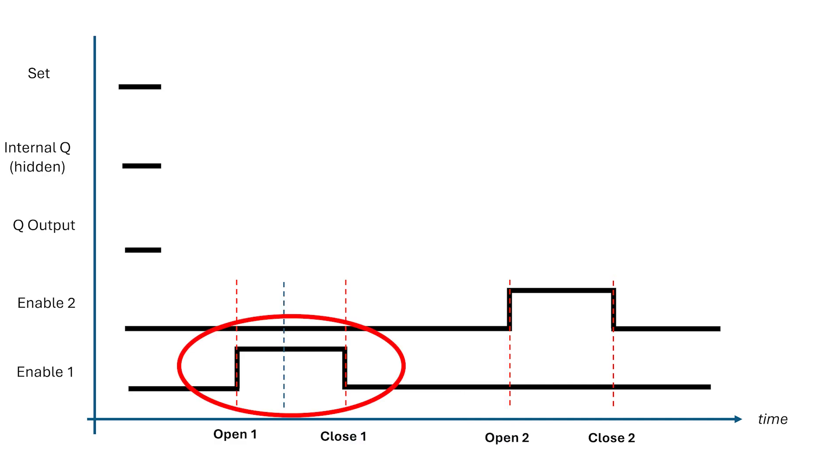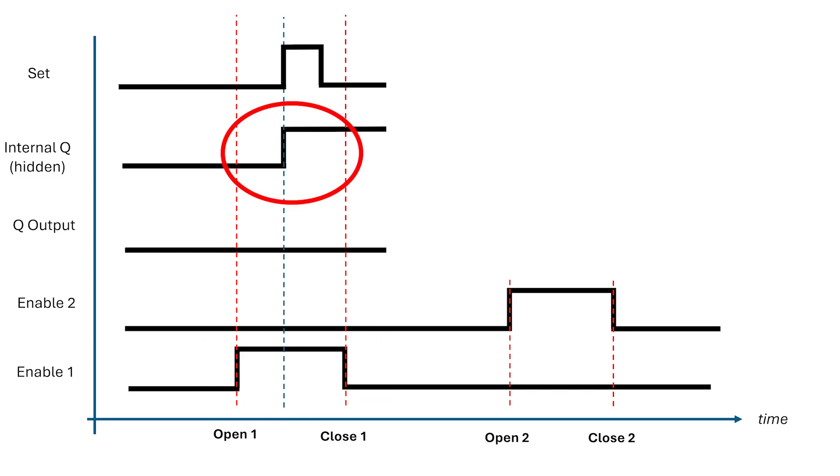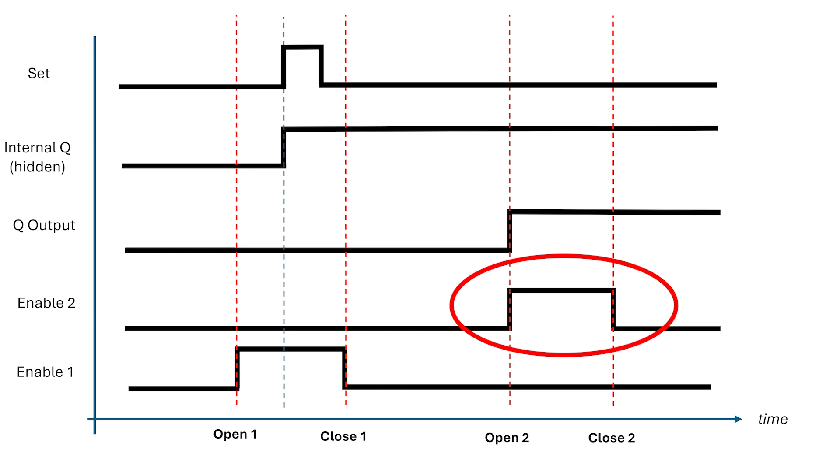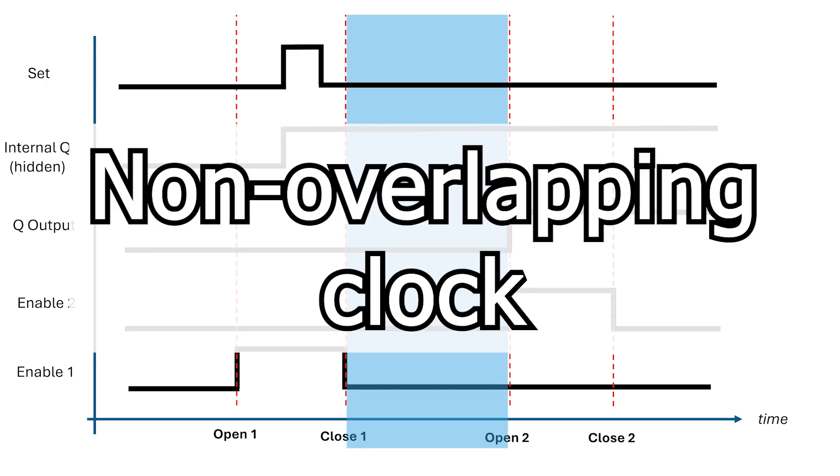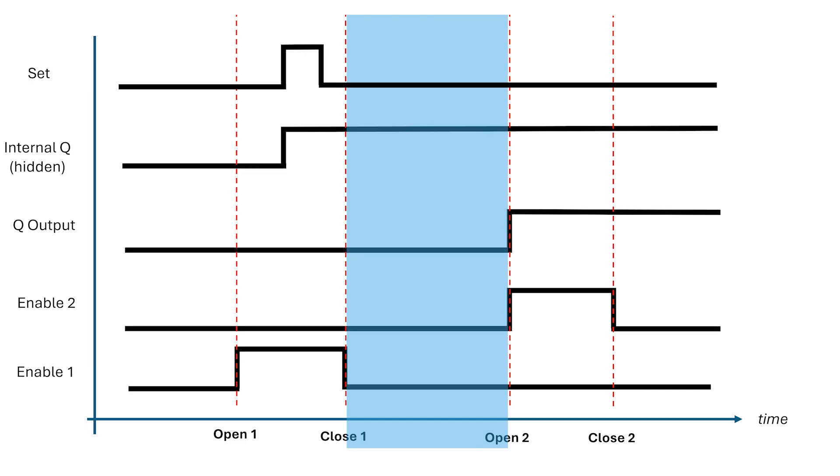When enable 1 is high, the set signal goes through, and the internal Q signal goes high. Next, enable 2 goes high, and the Q output goes high immediately. Then, enable 2 goes low. Note, we still have this period between the two enable signals in blue. This is called a non-overlapping clock. By trapping the data in between the two enable signals for a short period of time, we prevent the race around conditions.